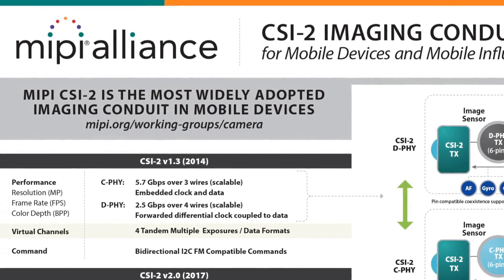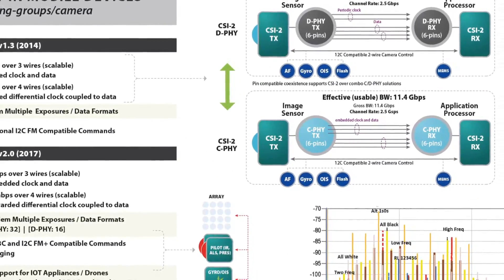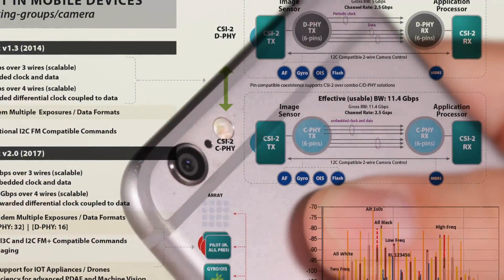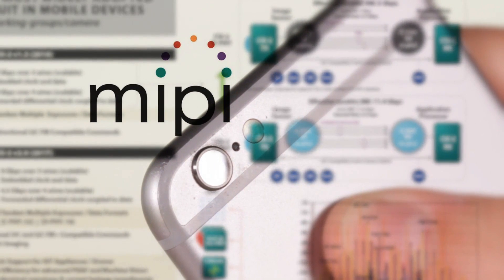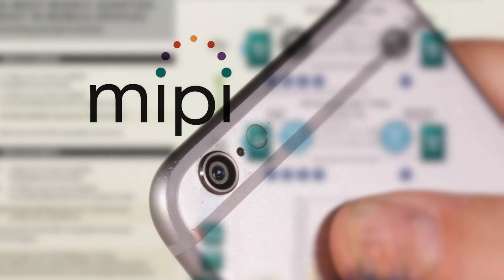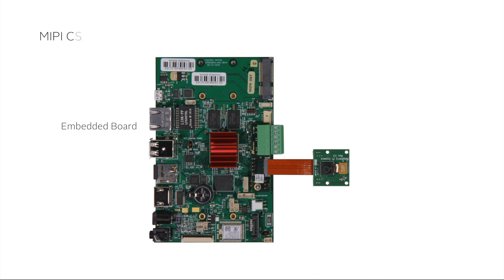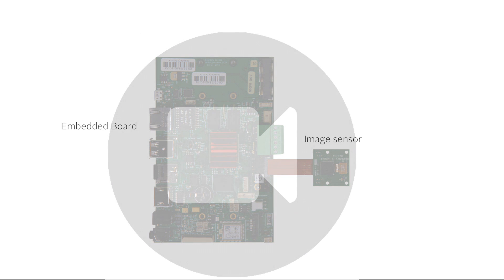CSI is a camera serial interface specified by the MIPI Alliance, a non-profit organization that gathers all major companies involved in the mobile device industry. CSI2 is the most widespread image sensor interface in the embedded systems industry, used in most mobile phone and tablet cameras. MIPI CSI2 is not a camera interface but a sensor interface. It is commonly used in embedded systems to connect an image sensor to an embedded board that controls it and processes the image data. The board and the sensor together act as a camera.